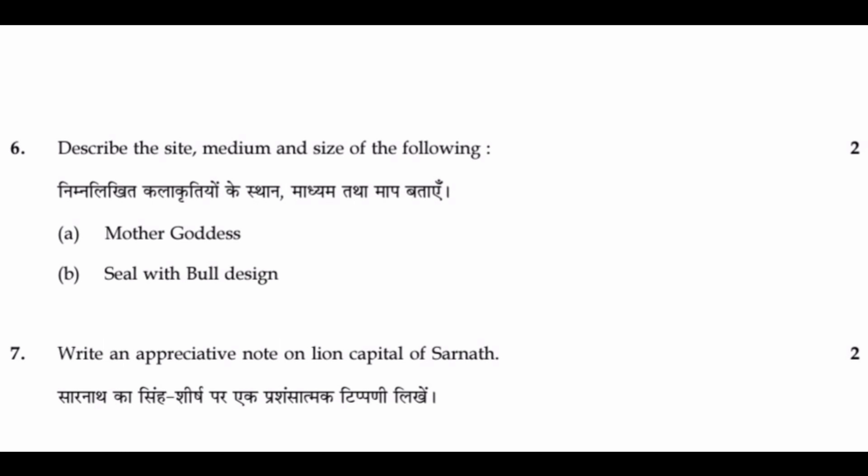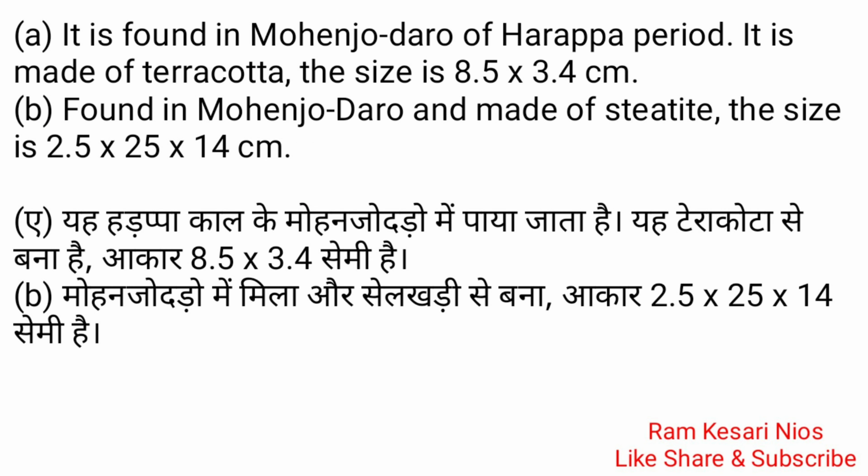Question 6: Describe the site, medium and size of the following artworks: A. Mother Goddess and B. Seal with Bull Design. A. It is found in Mohenjodaro of the Harappan period. It is made of terracotta. The size is 8.5 x 3.4 cm. B. Found in Mohenjodaro and made of steatite. The size is 2.5 x 25 x 14 cm.